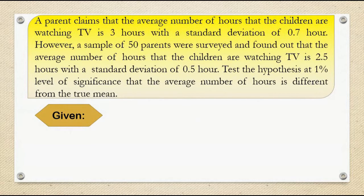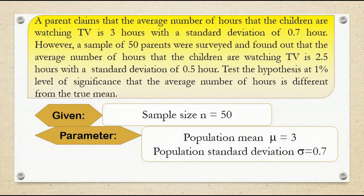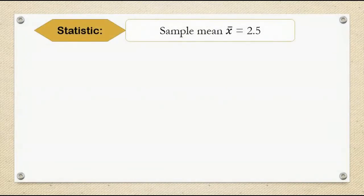Given: sample size n is equal to 50. Parameter: population mean mu is equal to 3. Population standard deviation sigma is equal to 0.7. Statistic: sample mean x-bar is equal to 2.5.